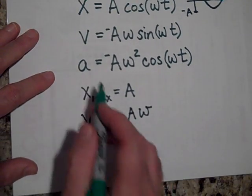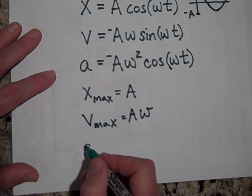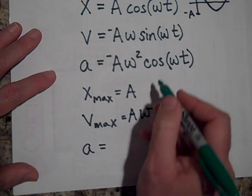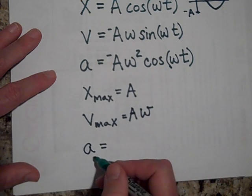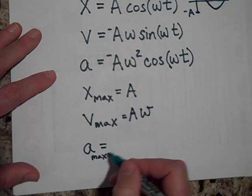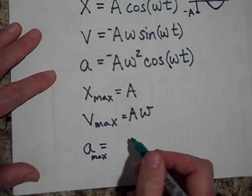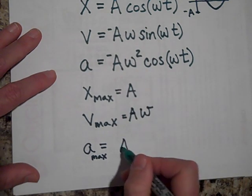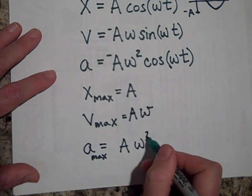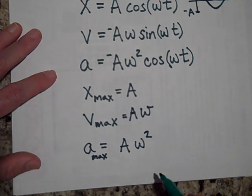And the maximum acceleration it can have, remember again, this, the biggest this can be is one. So a max is going to be equal to A omega squared. So there you have it.